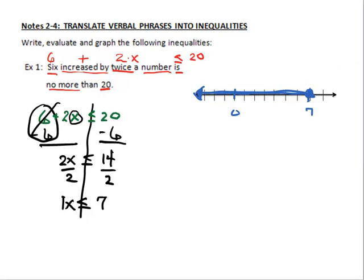Now I can check this by plugging in a number down here. So I'm going to plug 0 as a solution. It's in the shaded area. And I'm going to plug in 0 in there. So I can say 6 plus 2 times 0 is less than or equal to 20. 2 times 0 is 0. Plus 6 is just 6. 6 is less than or equal to 20. That's a true statement. So it appears that I did this right.